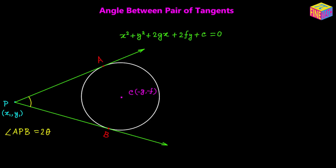In this video we are going to see how to determine the angle between a pair of tangents drawn from an external point to a given circle. Let's suppose we have a circle whose equation is x squared plus y squared plus 2gx plus 2fy plus c equals 0.